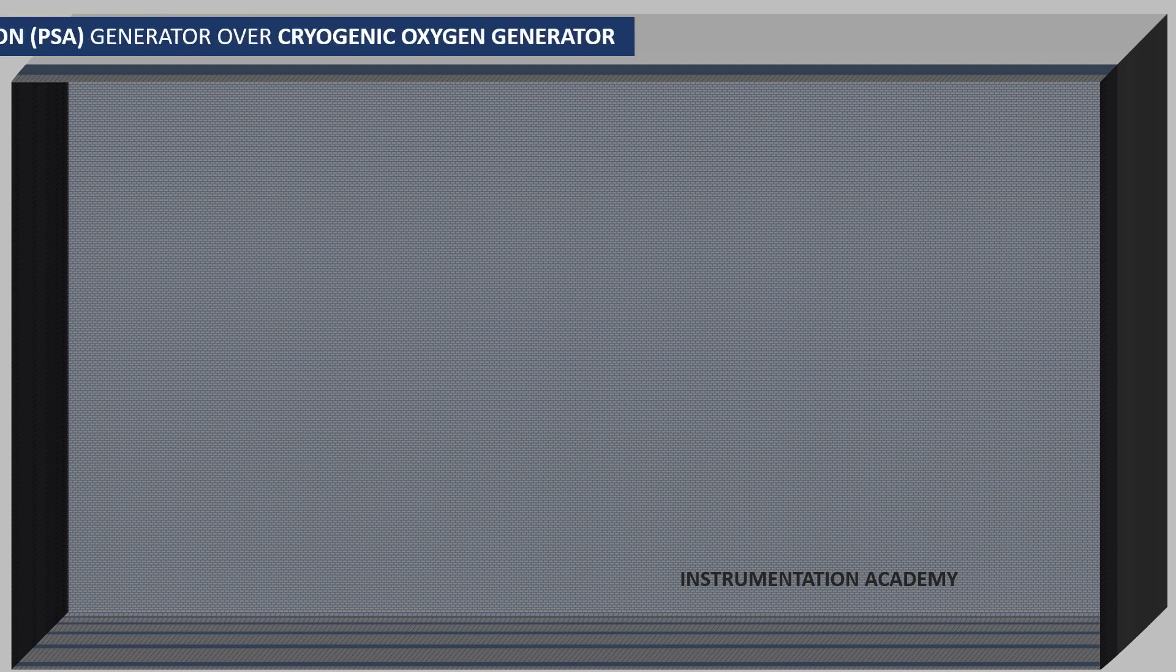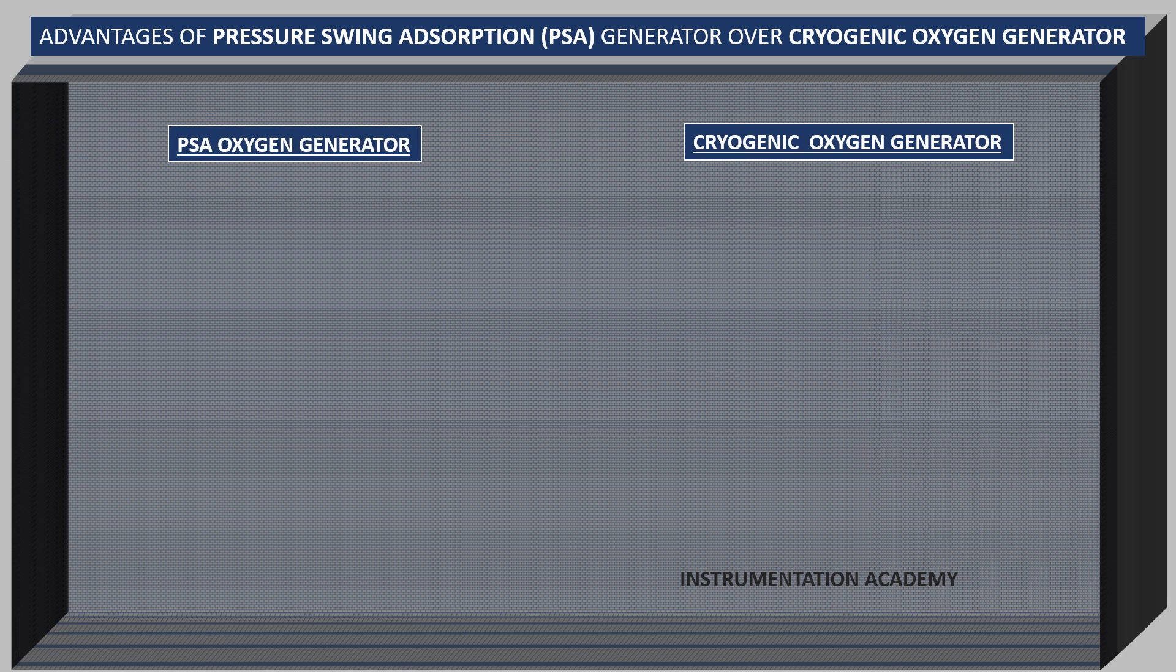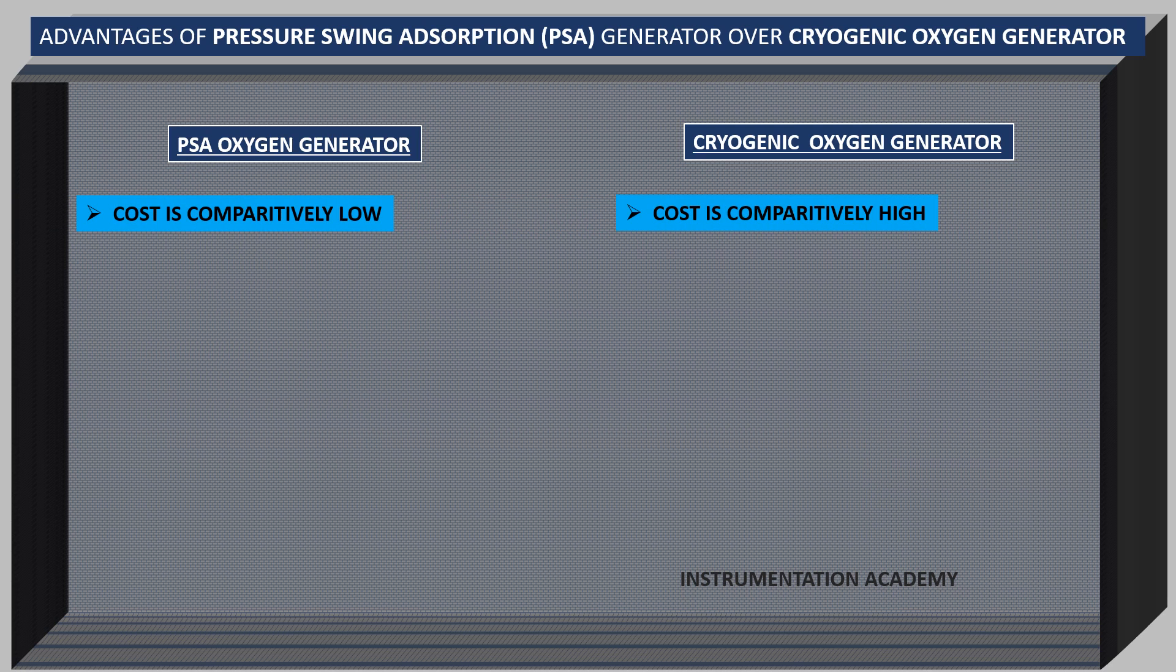Advantages of PSA oxygen generator over cryogenic oxygen plant. Investment cost of PSA generator is less than half of that of an equivalent cryogenic oxygen plant. PSA oxygen generator startup time is only 5 minutes.